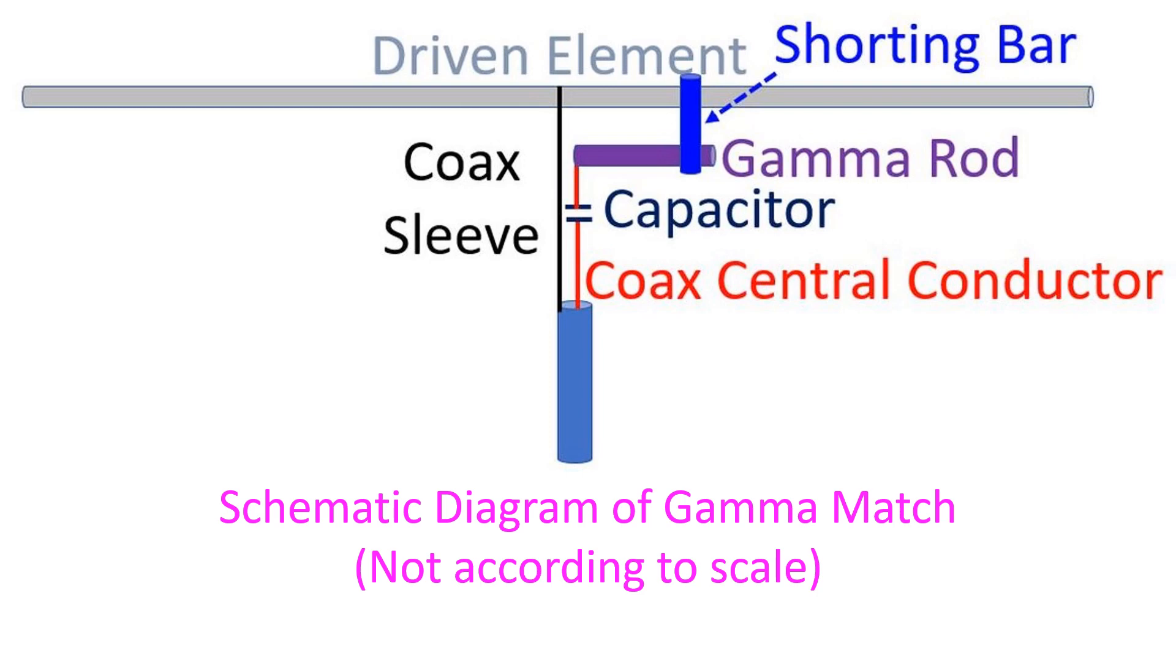As the RF voltage at the centre of a half wave antenna is zero, the outer sleeve of the coax can be connected here which corresponds to the position on the boom as well. The central conductor of the coax is then connected beyond the centre point through a capacitor to tune out the inductance of a connecting arm of antenna.